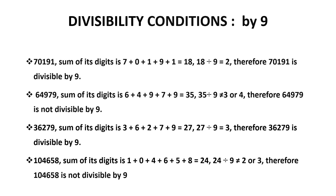The number 14658 — what is the sum of its digits? 24. 24 is not divisible by 9; it leaves a remainder. Therefore 14658 is not divisible by 9.